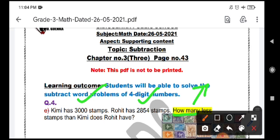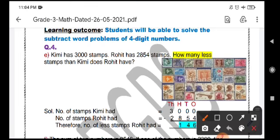So we are going to subtract the number of stamps Rohit is having from the number of stamps Kimi is having. You can see here, here is a picture of stamps given, different types of stamps of India. So now we are done with the understanding part and we have got the clear word. That is we are going to do the mathematical operation, that is subtraction in this question.